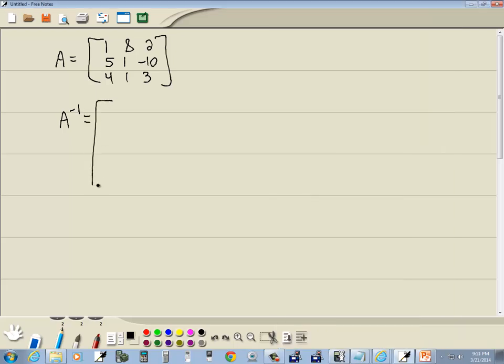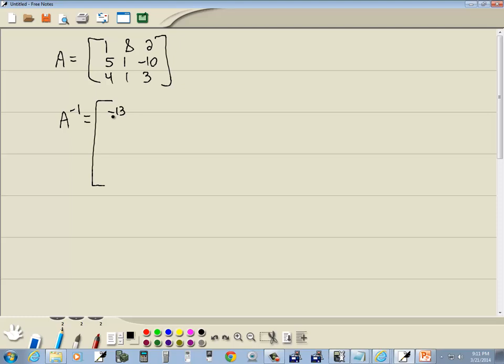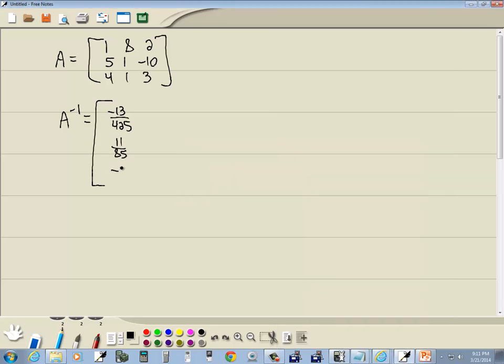Okay. Still don't see everything, but that's okay. This is negative 13 over 425, 11 over 85, and negative 1 over 425.